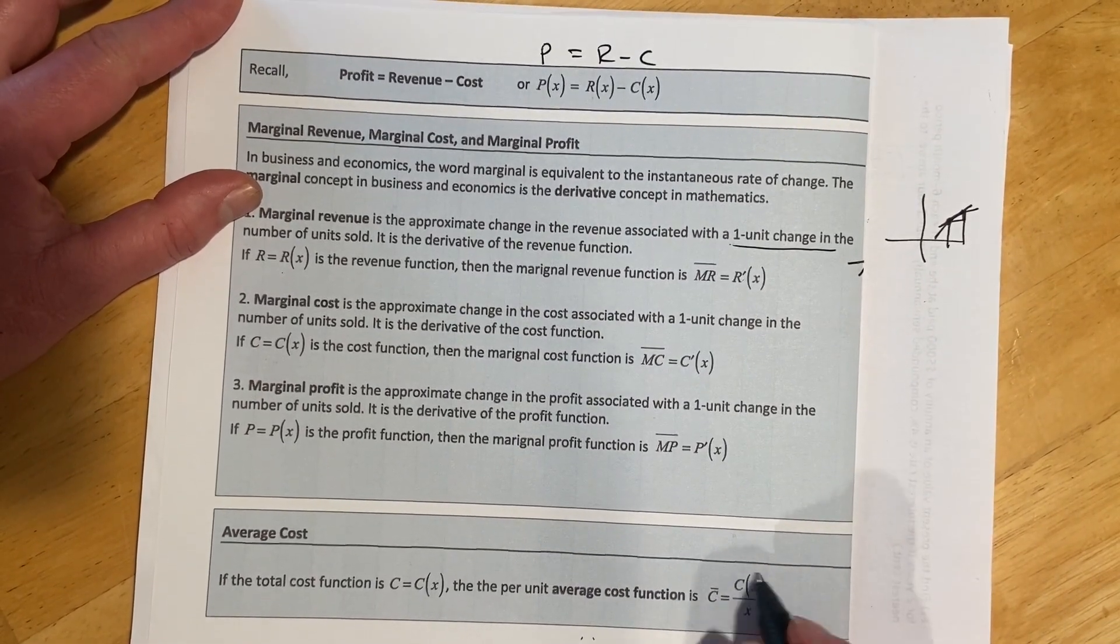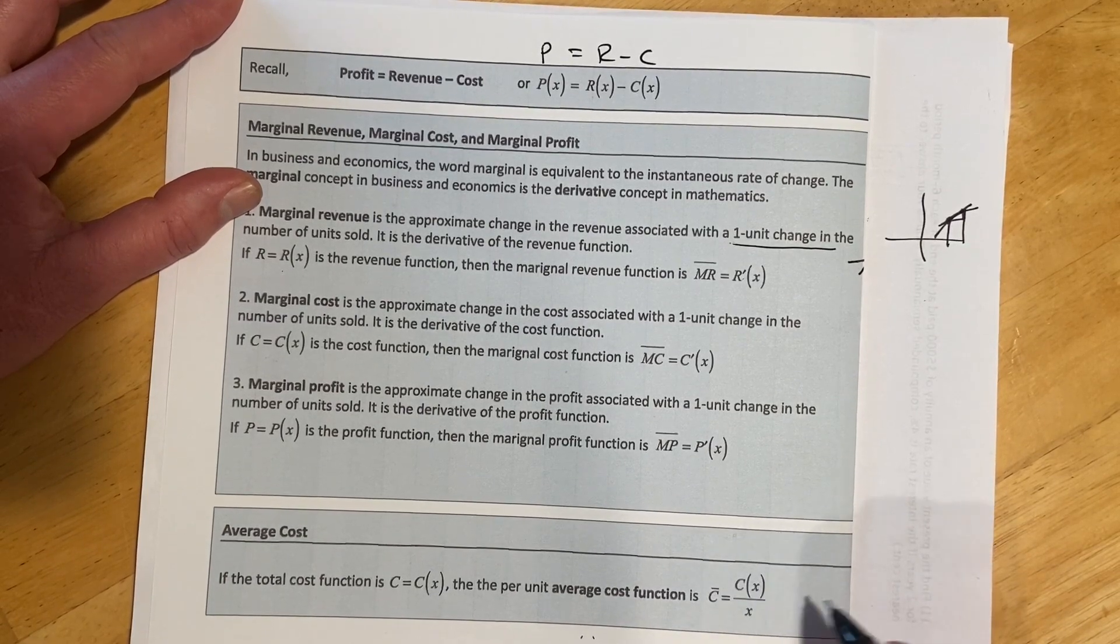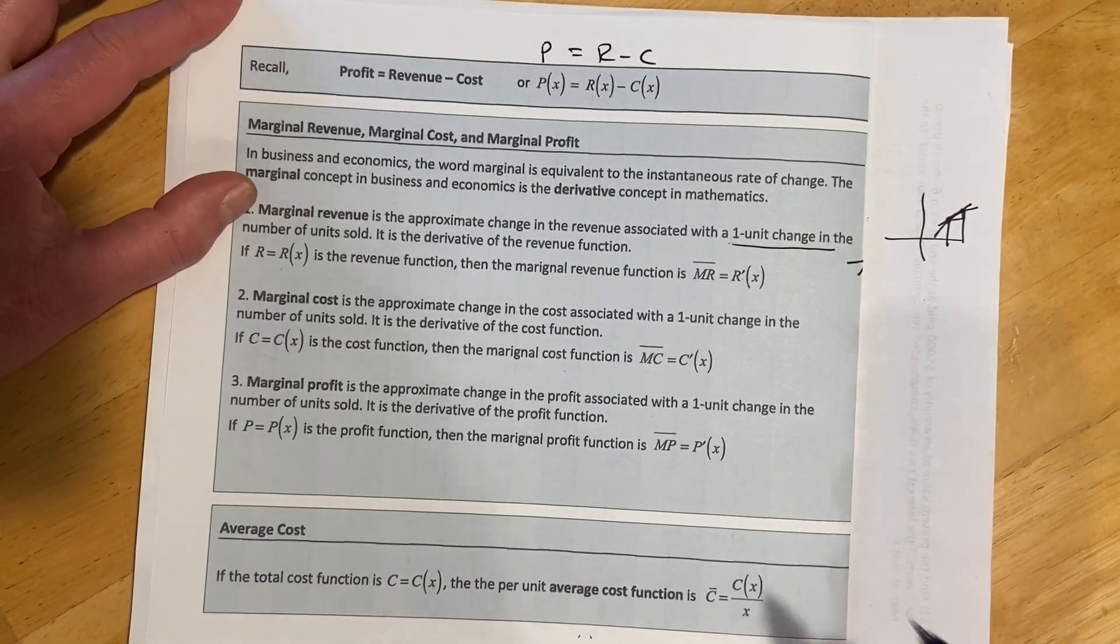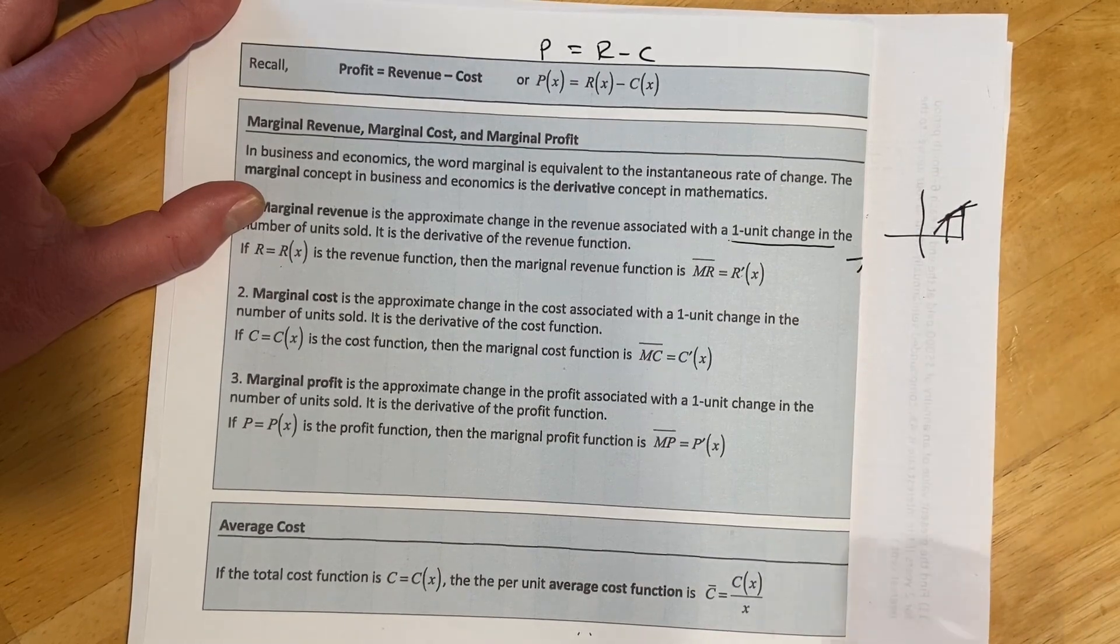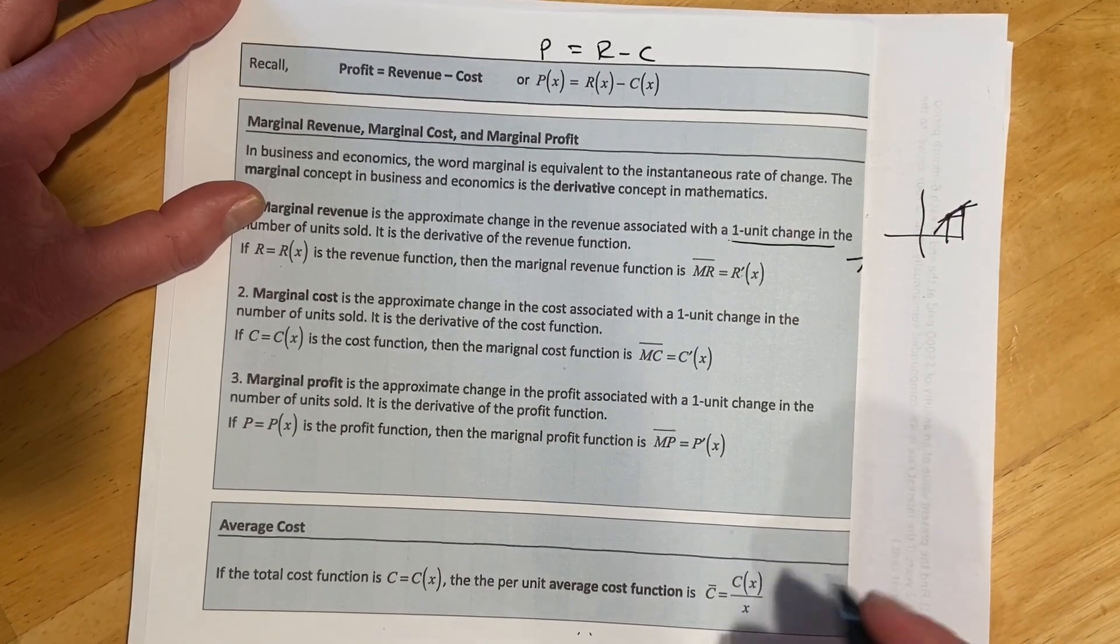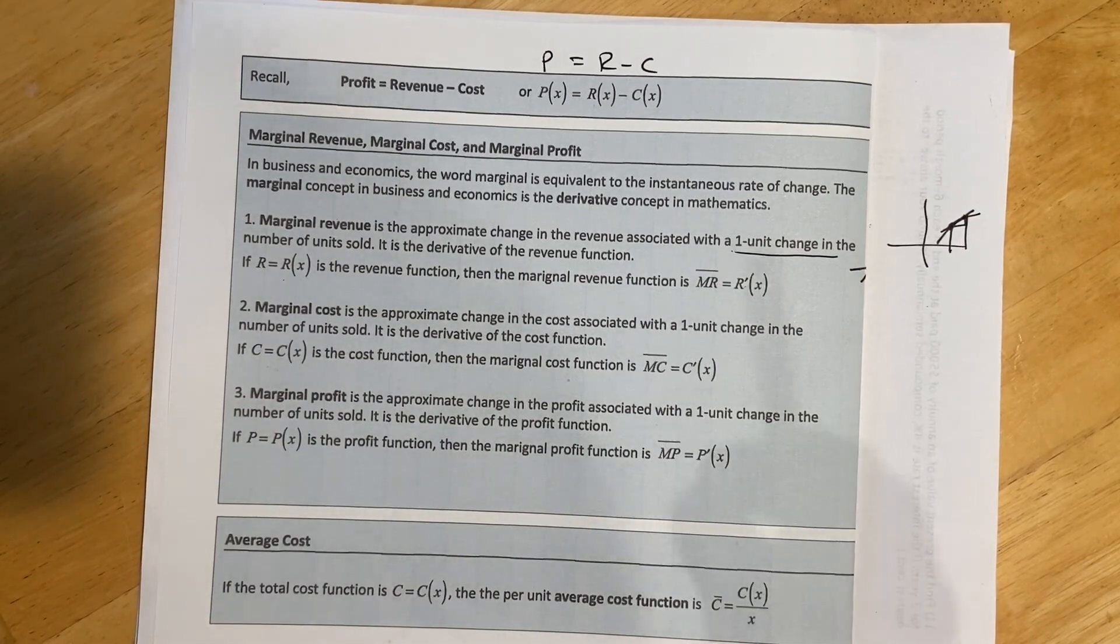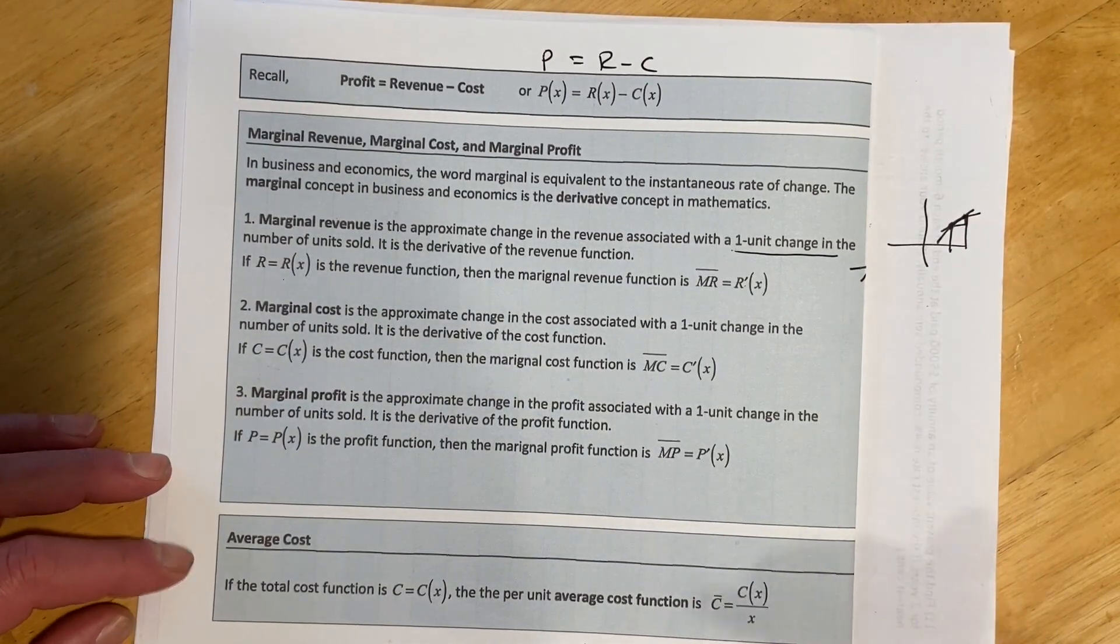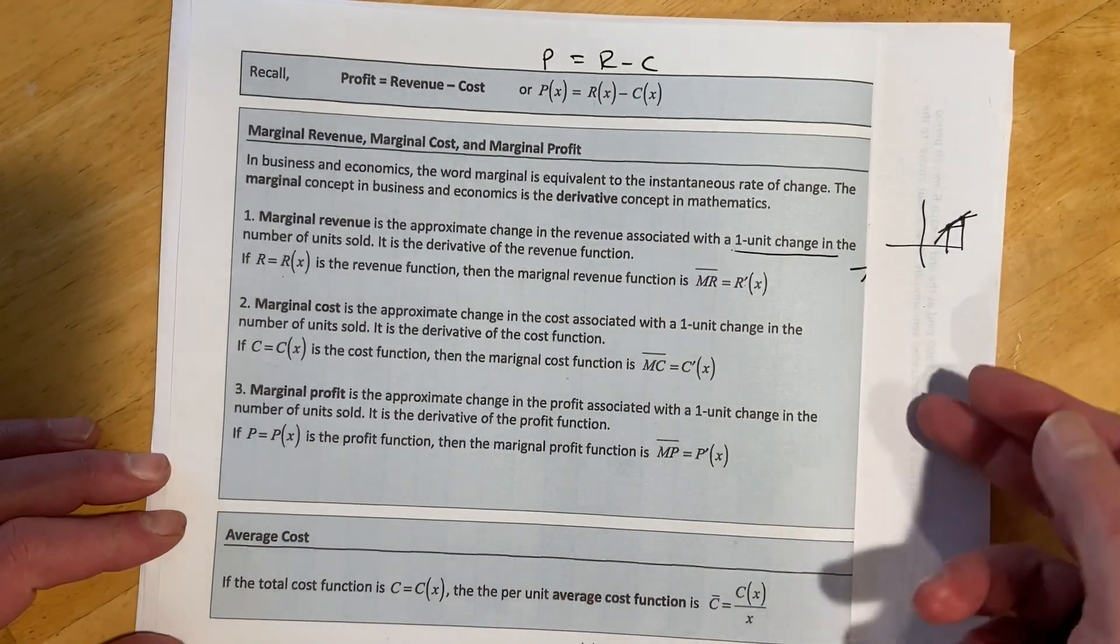So all this means is we're taking the total, the cost, and then we're dividing by the number of units, right? So if I spent $500 making something and I made five of them, then I would know that I spent $100 per unit. So that's what this is showing. And we can do that with money, but we're also going to see we can do it with functions where we just actually divide the function by the x and then we have a function that will give us average cost per unit. So those are our definitions. Let me show you how that looks in some examples.